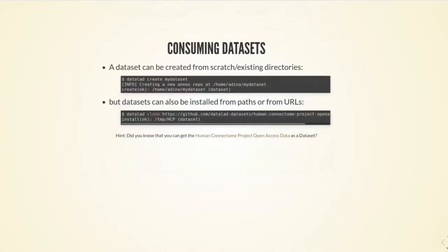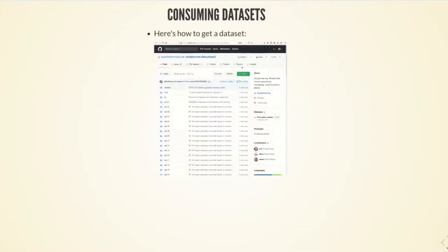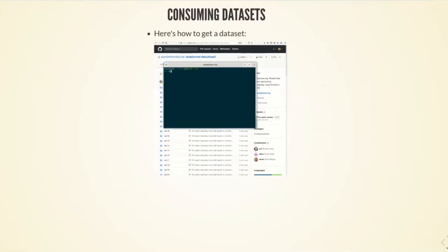To demonstrate how it works, I'm going to show you how you clone datasets — how you can obtain other people's datasets — and that is done with a datalad clone command. This command can point to a local path, but it can also point to a GitHub URL. For example, you can go to GitHub and clone a dataset that contains all the data from the Human Connectome project. Here's how that looks: here's a Git repository, you get its URL and put it into a datalad clone command.